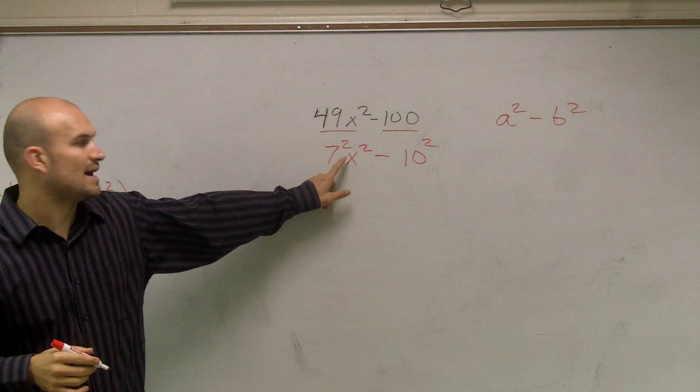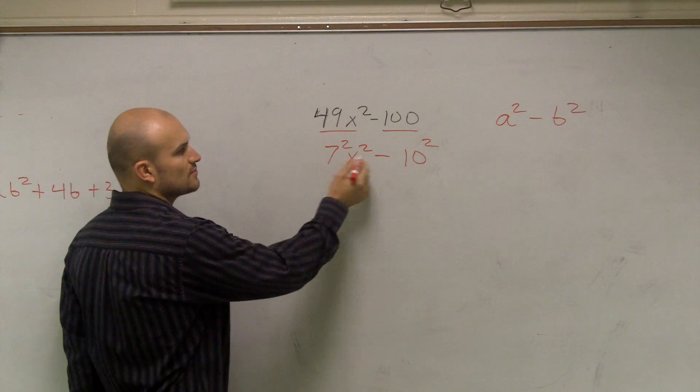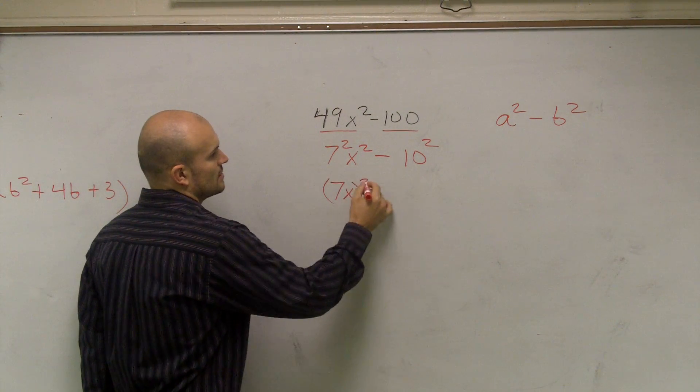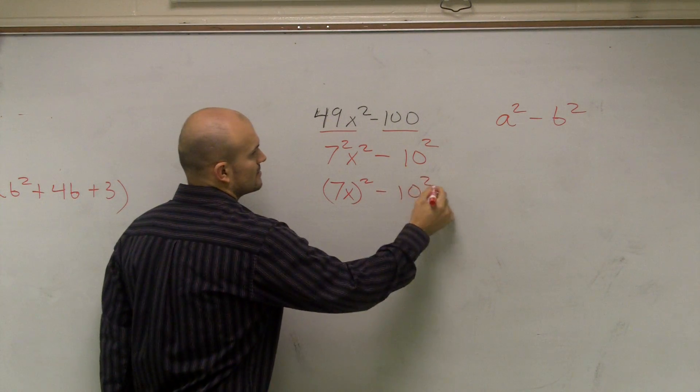And then I'm just going to combine this as one number squared. 7 squared times X squared is the same thing as 7X squared minus 10 squared.